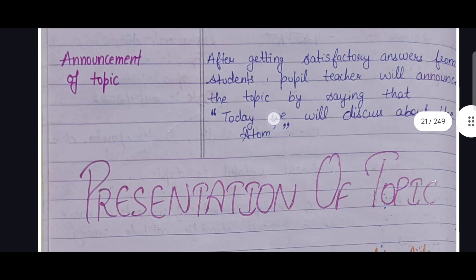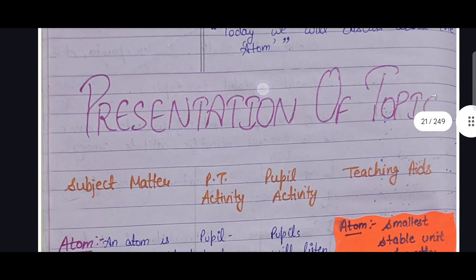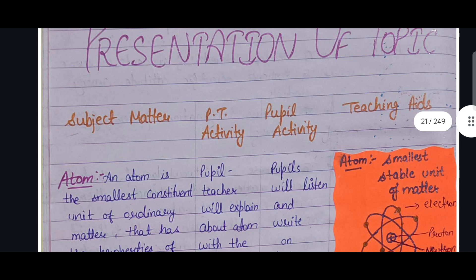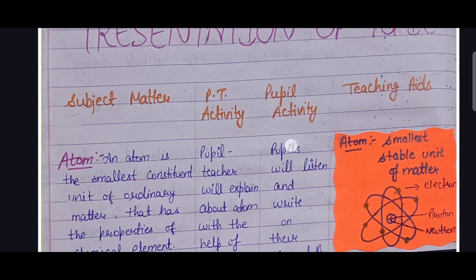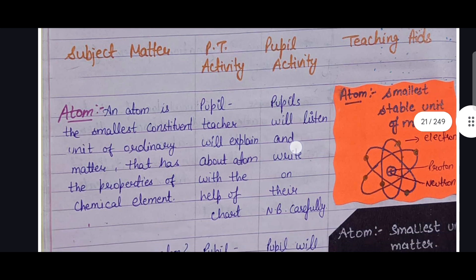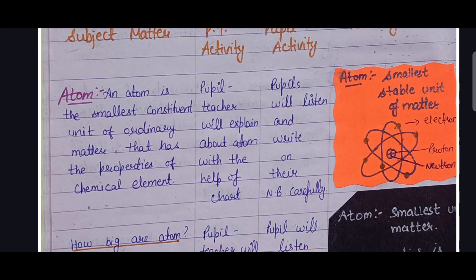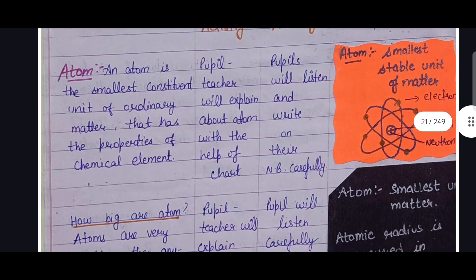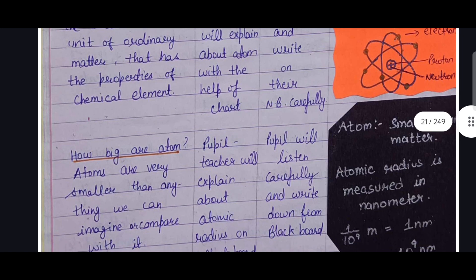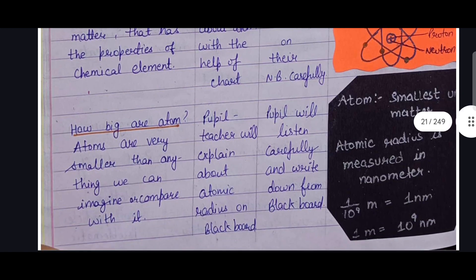The presentation of the topic is structured in four columns: subject matter, PT activity, pupil activity, and teaching aids. Subject matter covers all the content being taught, like the atom and its definition. PT activity means the pupil teacher will explain the topic using a chart or blackboard. Pupil activity is what students are doing — they will listen and write in their notebooks. Teaching aids such as charts or blackboard work are also mentioned.